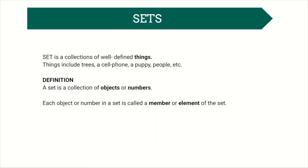The topic of sets is by far the simplest topic to grasp in mathematics. A set is basically a collection of well-defined things: things like a tree, a cell phone, a puppy, people, and so on. So a set is a group or collection of objects or numbers.